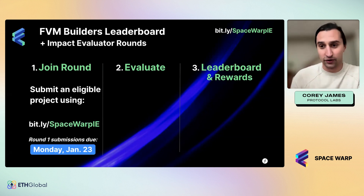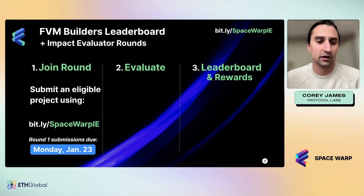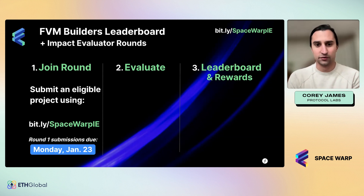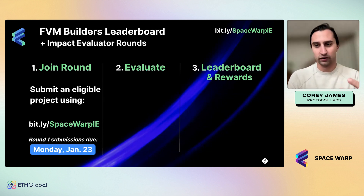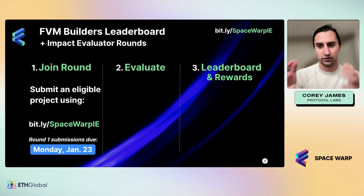Joining a round is really simple — you can learn all about it from this bit.ly link: bit.ly slash SpaceWarpIE. The first step for being eligible to participate is just submitting your own project. Each team can be represented by one individual that can submit up to two projects, but we typically recommend you just submit one to concentrate your votes into one initiative.